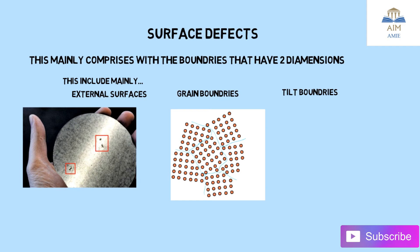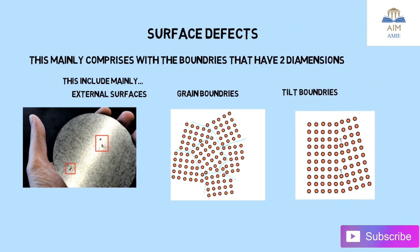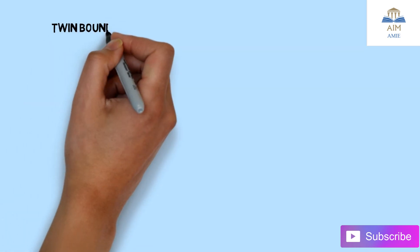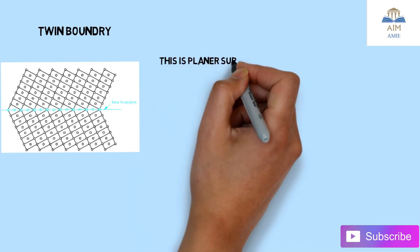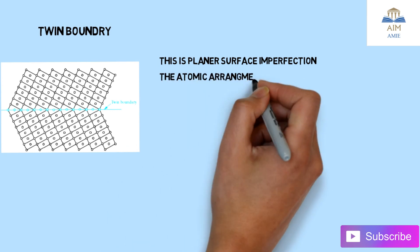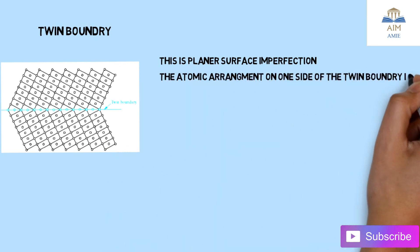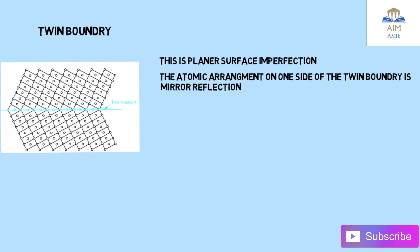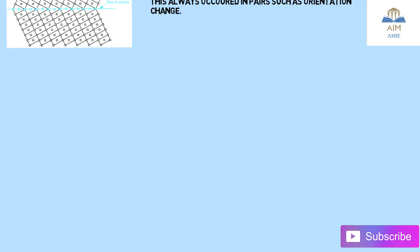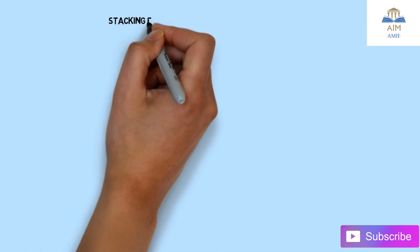The next surface defect is tilt boundaries, which involve angular displacement. After that is the twin boundary — twin boundary is essentially a mirror-like structure. This is a planar surface imperfection — 'planar' is a very important word here. The atomic arrangement on one side of the twin boundary is a mirror reflection, and this always occurs in pairs involving an orientation change.